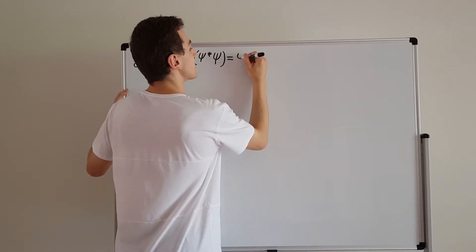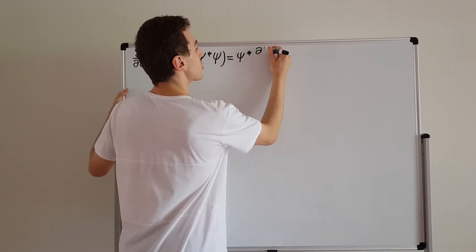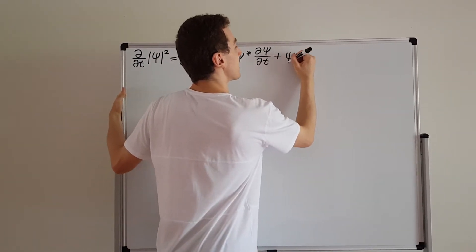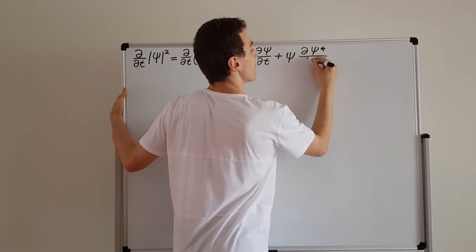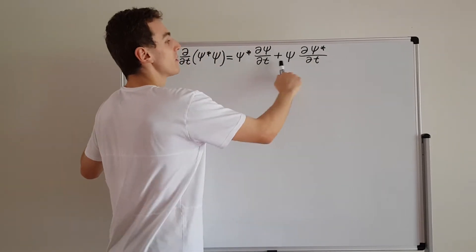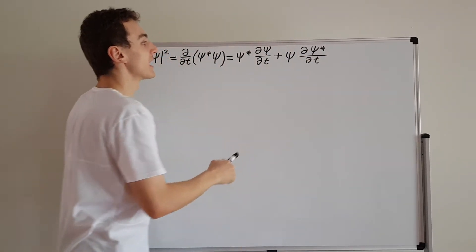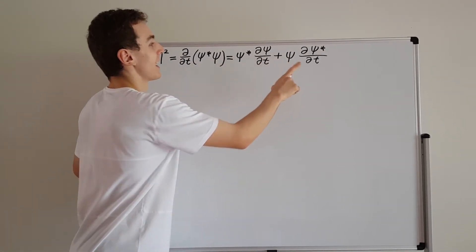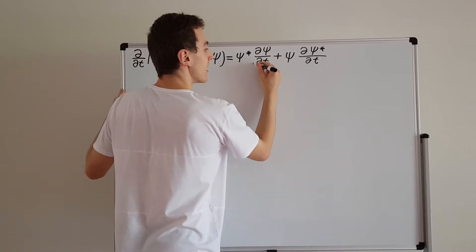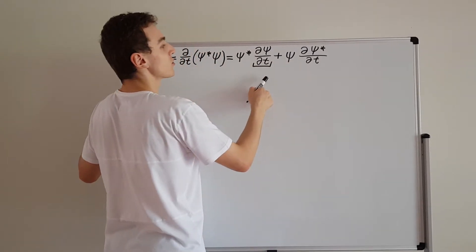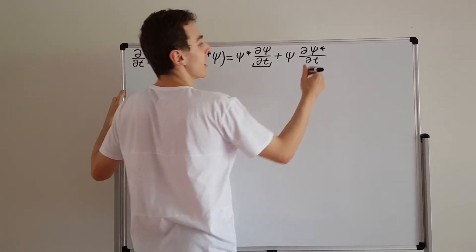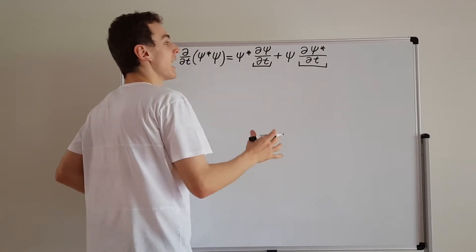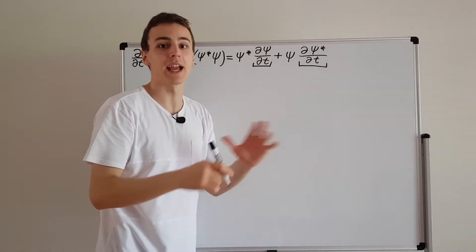Applying the product rule gives us psi star times the partial derivative of psi with respect to time, plus psi times the partial derivative of psi star with respect to time. In the previous video, which I encourage you to watch first, we derived expressions for d psi dt and for its complex conjugated version. We can unpack all of these and turn this into a big expression, and then we're going to find some cancellations occur.